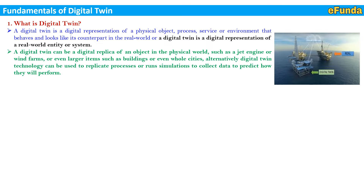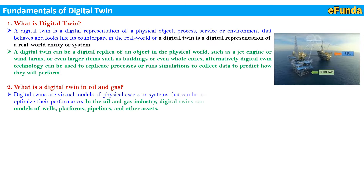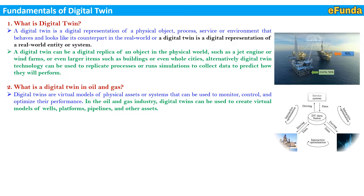One can see examples of digital twin technology for implementation at an oil and gas facility where the real as well as the virtual representation is shown. Second, what is a digital twin in oil and gas? Digital twins are virtual models of a physical asset or system that can be used to monitor, control and optimize their performance. In the oil and gas industry, digital twins can be used to create virtual models of wells, platforms, pipelines and other assets.